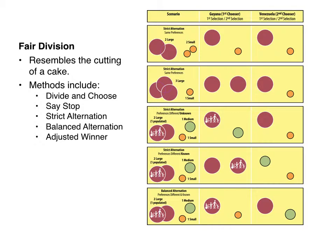This leads to something called balanced alternation, where the inequities of strict alternation can be resolved by taking turns at taking turns. Rather than selecting the order Guyana, Venezuela, Guyana, Venezuela — Guyana chooses first in the first round, and Venezuela chooses first in the second round, making the order Guyana, Venezuela, Venezuela, Guyana. This prevents Guyana from garnering both large islands. Under balanced alternation, Guyana gets the populated island first, Venezuela then gets a choice, and knowing it goes first in round two, Venezuela secures the large island while Guyana gets the medium — balancing out the inequities somewhat, though it does not guarantee the most equitable solution.